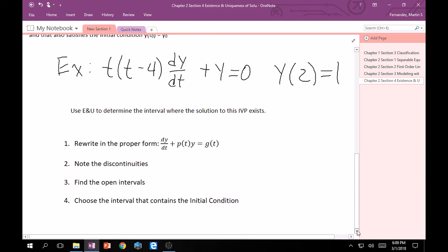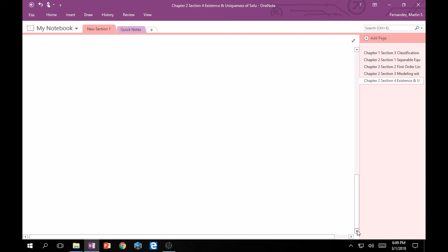Okay, so once we have all that written down, let's go down here and actually work this problem. So, if I rewrite that in the form that I want it, I'll have dy/dt plus 1 over t times (t minus 4) times y is equal to 0. And I still have my initial condition of y(2) is equal to 1.